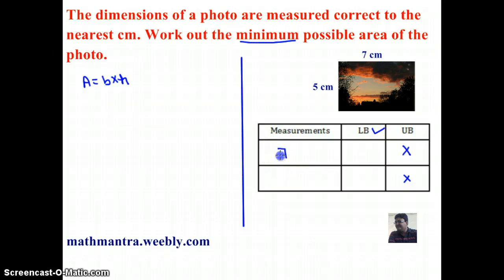Let's start by finding out the lower bounds of 7 centimeters and 5 centimeters. Both these dimensions are measured correct to the nearest centimeter, or 1 centimeter. Dividing 1 centimeter by 2, I get 0.5 centimeters.